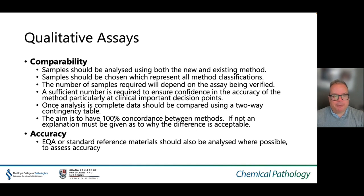Qualitative assay verification and validation essentially follows the same procedures outlined. In terms of comparability there are some differences: samples should be analysed using both the new and existing methods, and samples should be chosen which represent all method classifications. A sufficient number is required to ensure confidence in the accuracy of the method, particularly at clinically important decision points. Once analysis is complete, data should be compared using a two-way contingency table, with the aim of achieving 100% concordance between the two methods. If not, an explanation must be given as to why the difference is acceptable.